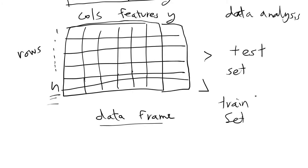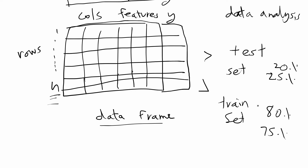When you do this data splitting, you usually want about 80% of your data to go into the training set and about 20% to go to the test set. Basically, the majority should go to training and a chunk goes to the test set. Sometimes people do 75-25. It's up to you the split you want to do on the number of rows in your sets, but usually it's about 80-20.